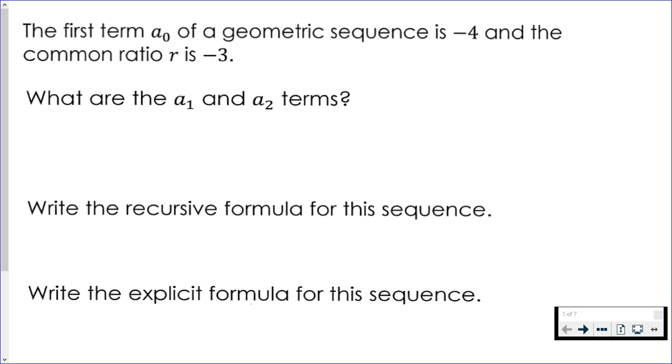We're given a geometric sequence that starts with term zero, and that term is negative four. The common ratio we're given is negative three, which means to get from one term to the next, we are multiplying by negative three.